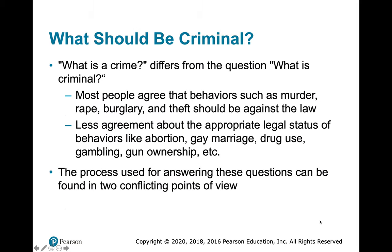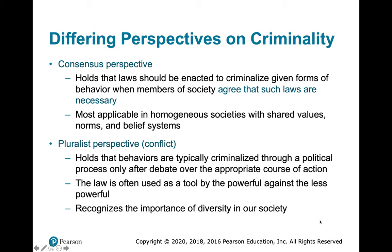What should be criminal? What is a crime is different from the question of what is criminal. There's general agreement that behaviors like murder, rape, burglary, and theft should be against the law. Other things like abortion, gay marriage, drug use, gambling, prostitution, and gun ownership have less agreement. How we answer these questions can be found in two models of the law: the consensus model and the conflict model. The consensus model says things become illegal because society has reached a consensus that those behaviors are unacceptable and those laws are necessary — this model applies more to homogenous societies where people share similar values, norms, and beliefs.